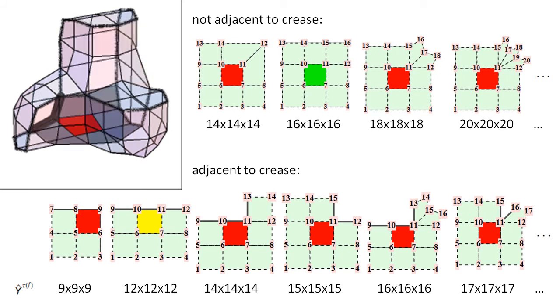For quads adjacent to the sharp crease, our publication enumerates common topologies and derives the trilinear forms that compute the volume contribution of the quad. Dimensions are 9x9x9, 12x12x12, and growing.